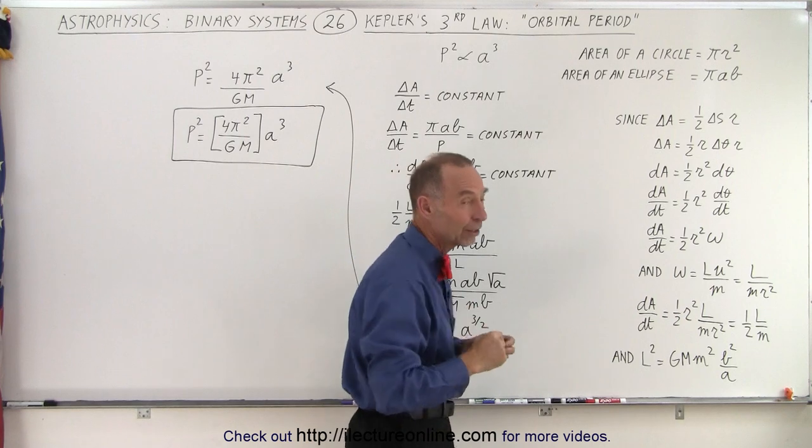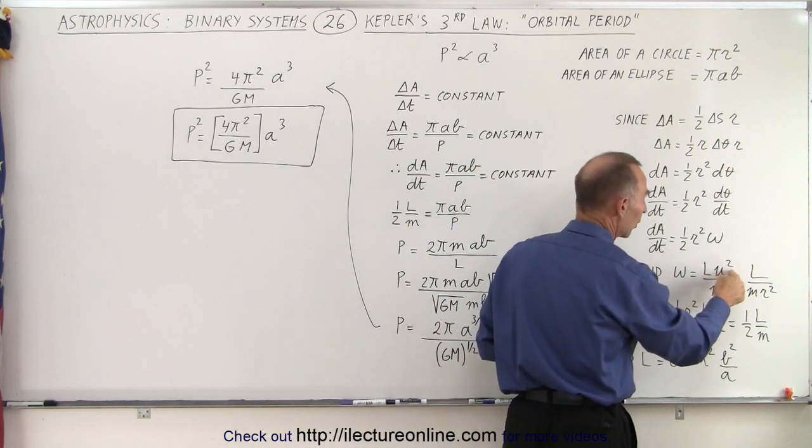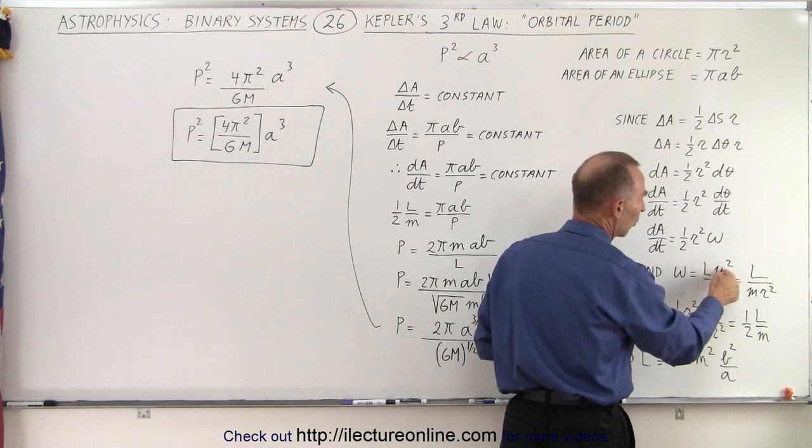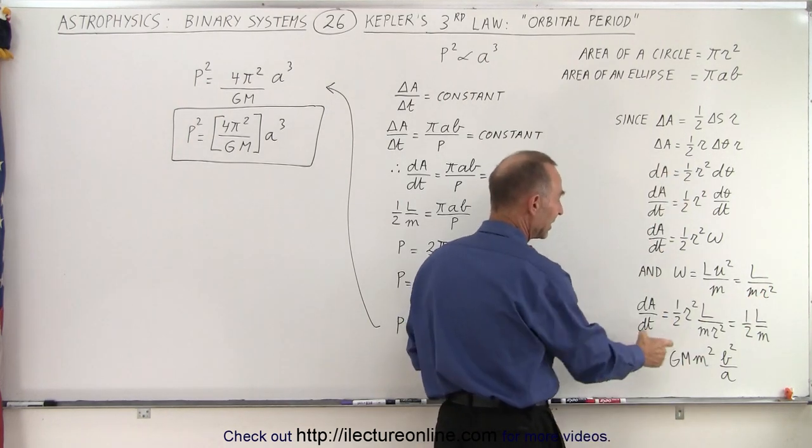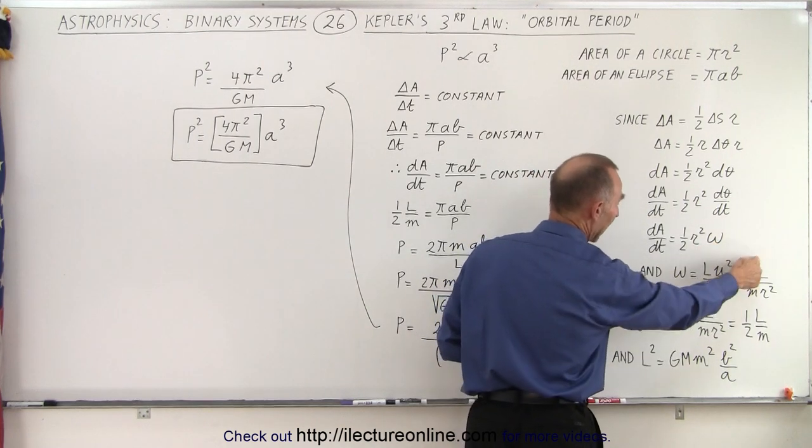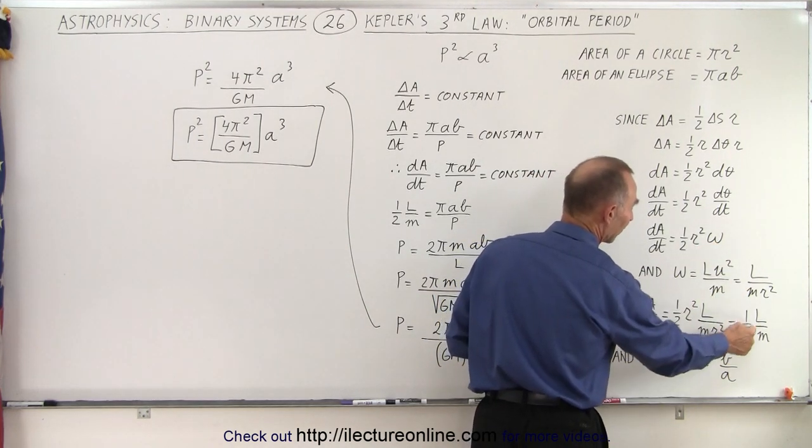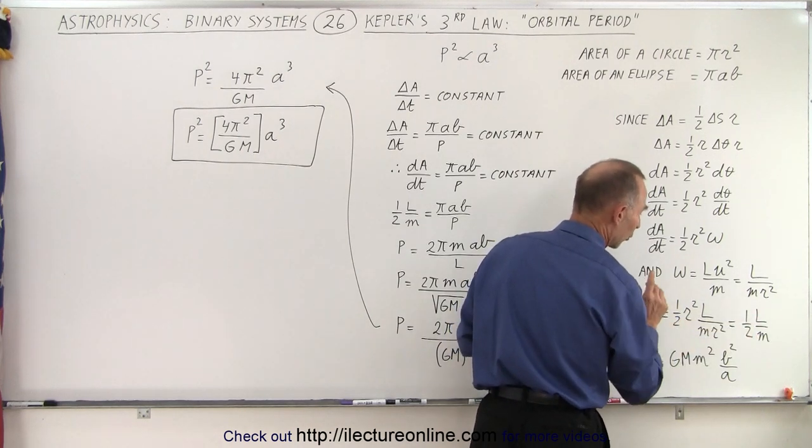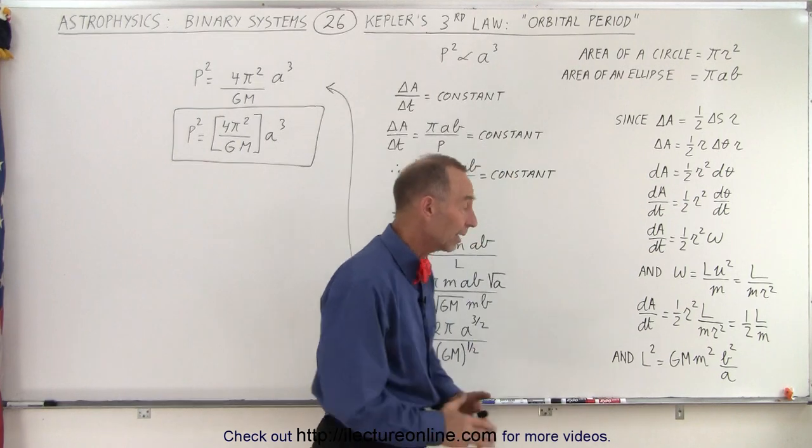So now we have an expression that we can plug in over here. But before we do that, we want to make some other comparisons. We remember that omega was equal to l times u squared over m. Remember that u was one over r. So this can be written as l divided by m r squared. And so then dA/dt can be written as one half r squared, and instead of omega, we can write l over m r squared. The r squares cancel out. So we have one half l over m, which is of course a constant. Makes sense because l is a constant and the mass of the planet is a constant.